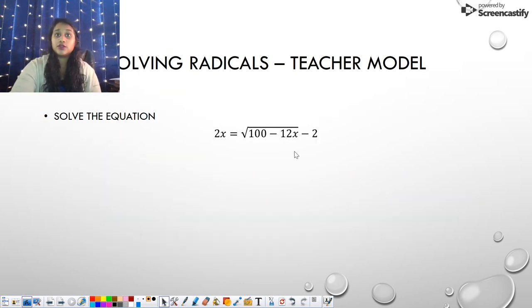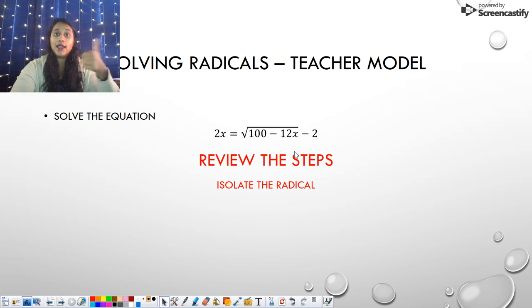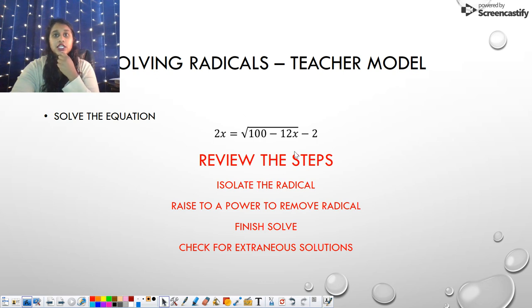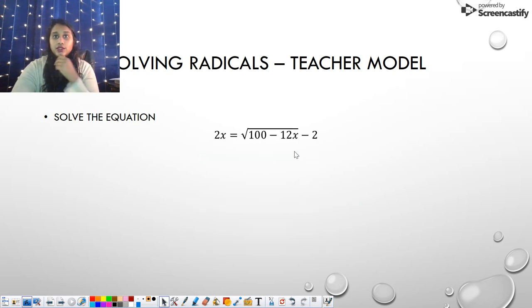So here is a solve radical. Just to recall those steps, we are going to isolate the radical, get rid of the radical, solve the equation and check for extraneous solution. So the first thing I want to do is isolate the radical. So let's look at all of our terms. I've got 2x, that's not a radical, so I'm going to leave it to the left. I've got the square root of 100 minus 12x, that is a radical, so I'm going to leave it on the right. Then I've got negative 2, that's not a radical, so I'm going to move it to the left. So we brought our plus 2 over.